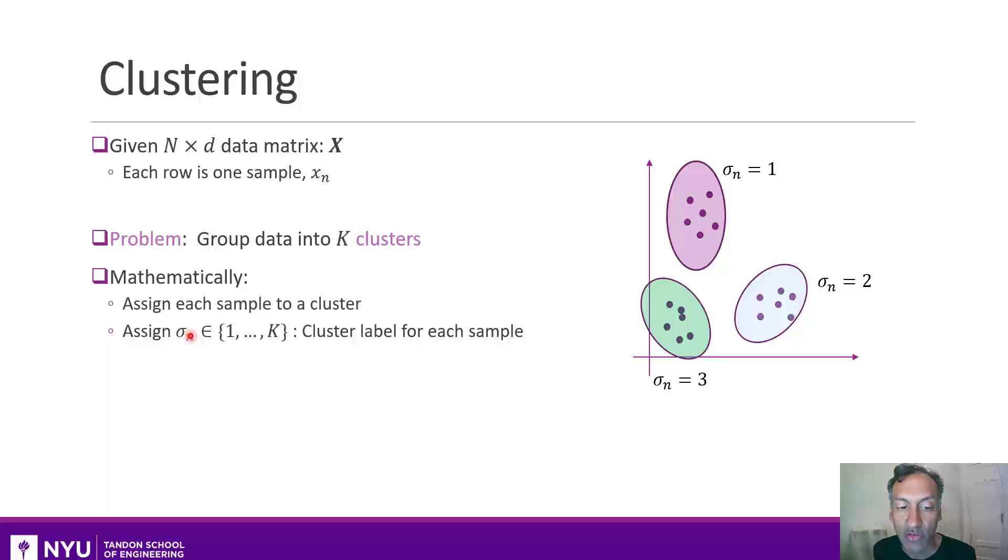What we mean by having a good cluster is that somehow when two points are in the same cluster, that is sigma n is equal to sigma m, then I want the distance between those points to be small.